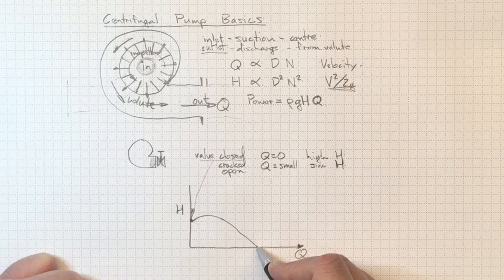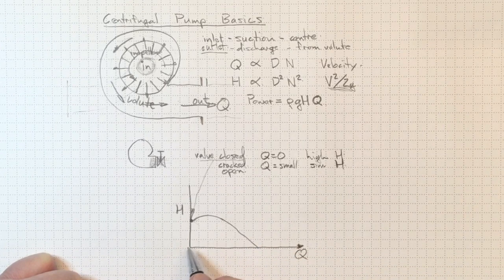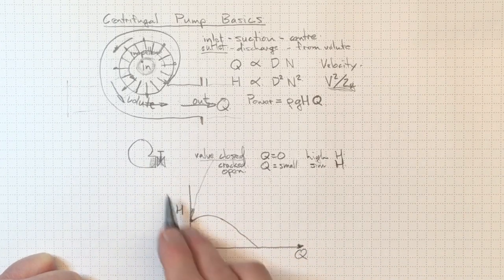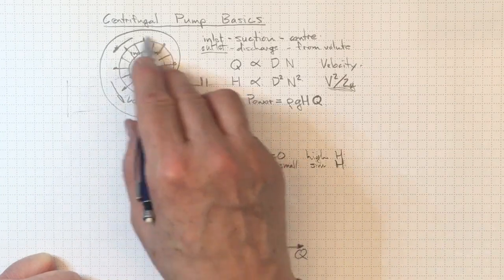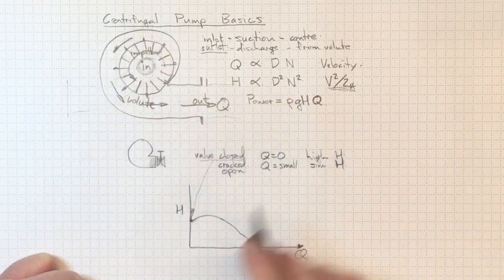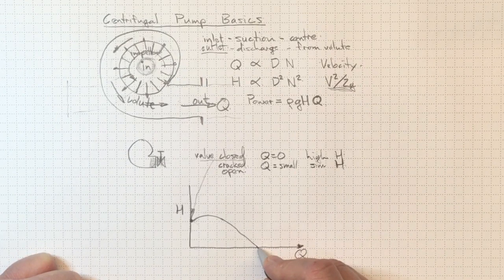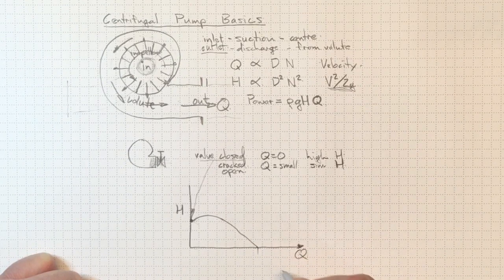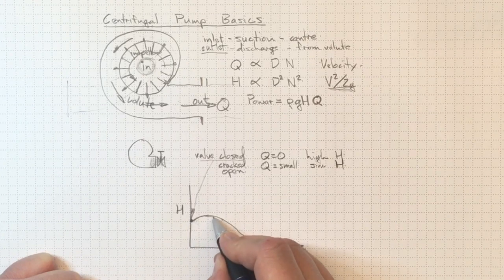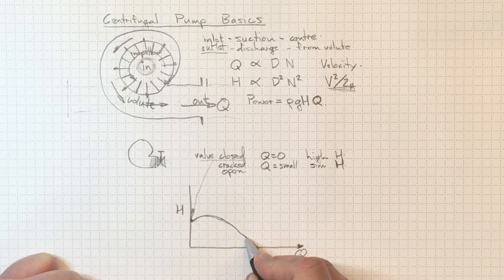And finally, once that gate valve is fully open and there's almost no head rise across the pump, all of the energy of the pump is going into just driving the flow through and out the other side, then we'll get down to about here. This is the highest flow rate we could get with that particular pump at no head rise across the pump.